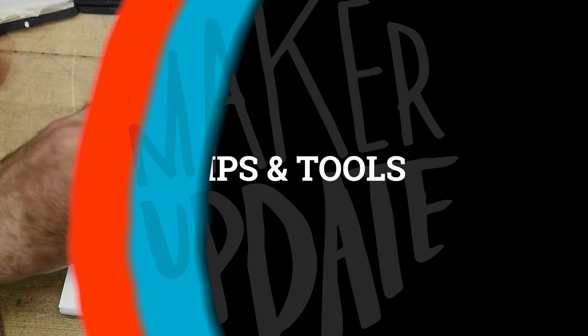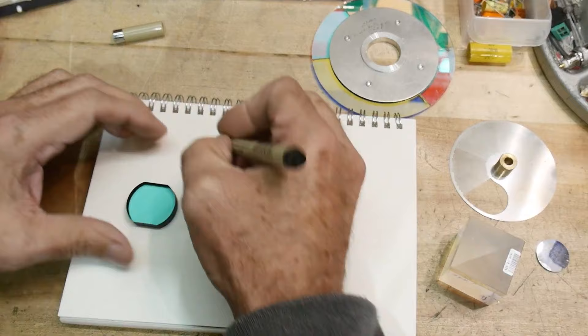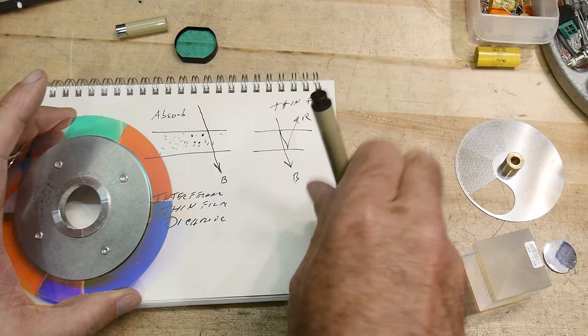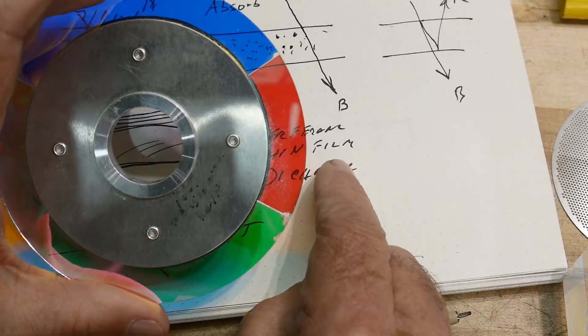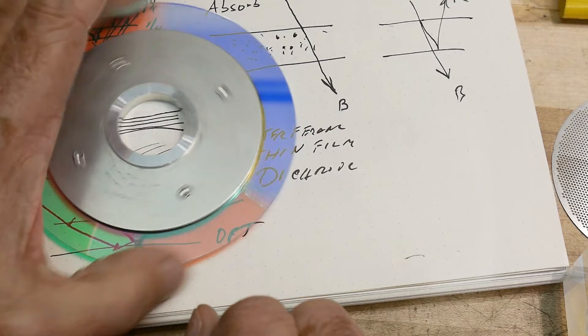Time for some tips and tools. If you want to know more about how dichroic filters and any number of other colored optical filters work, this YouTube video by IMSAI Guy might be the perfect thing to watch. He talks about the science behind absorptive filters, thin film filters, and a handful of others. How they work, and how they perform. It's full of examples and more than enough science to go way over my head. But if you like playing with light, give this one a watch.